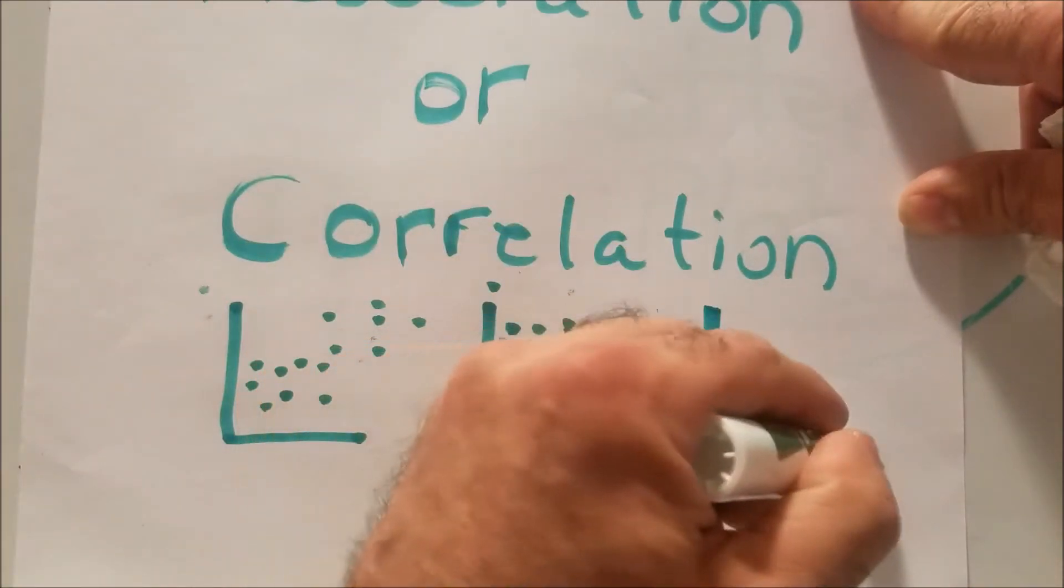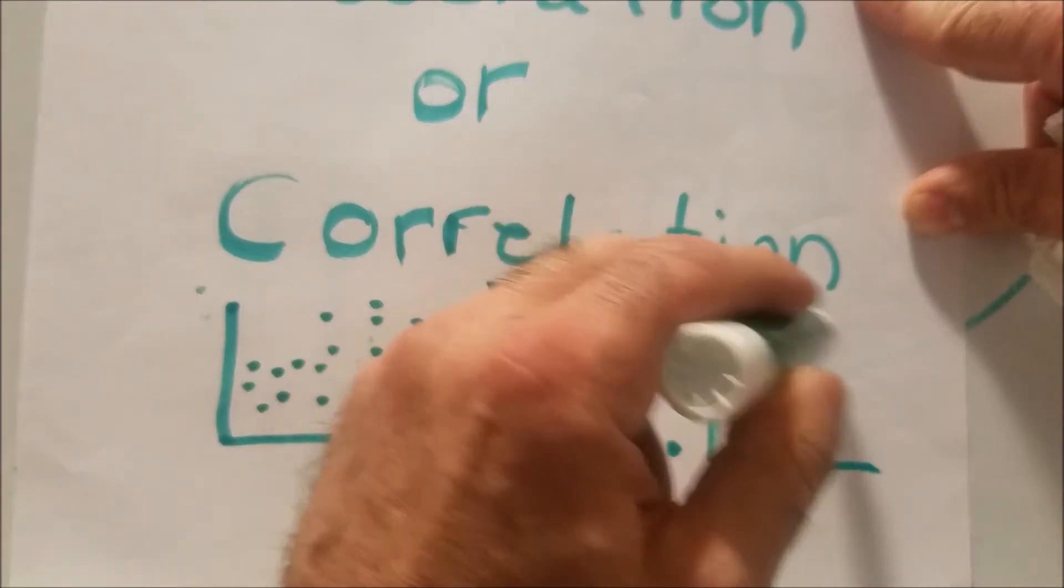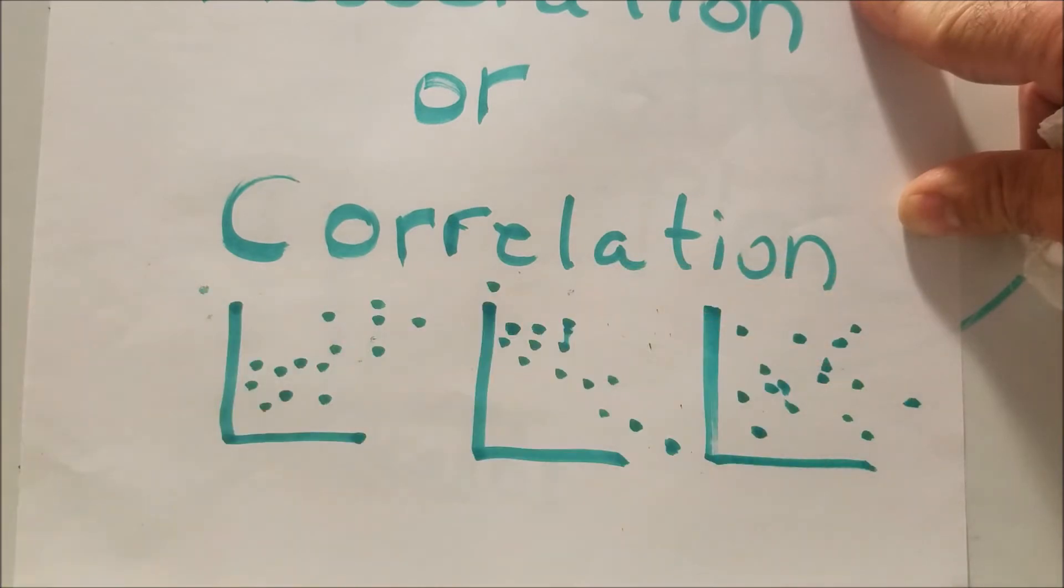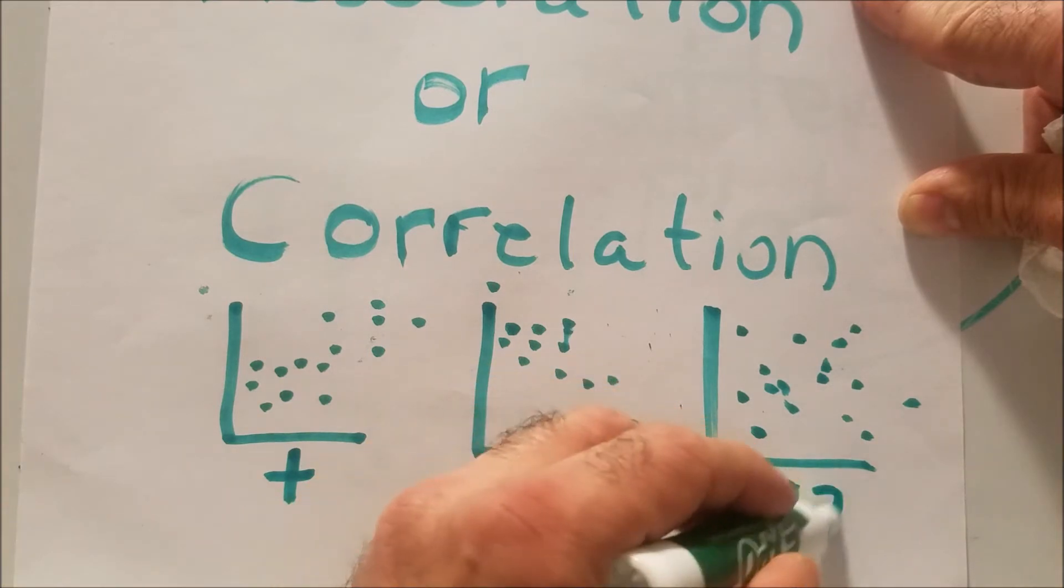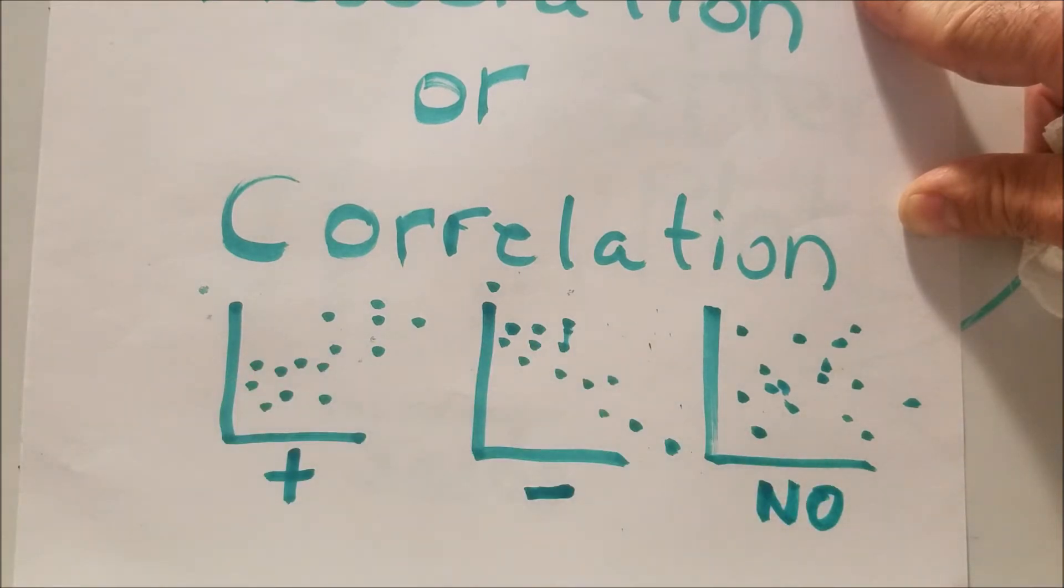And if you see no correlation, it's just everywhere, right? You don't see if it's going up or going down. So we have the positive correlation, plus sign, negative correlation, and no correlation. And again, the closer these points are together, the stronger the correlation is.